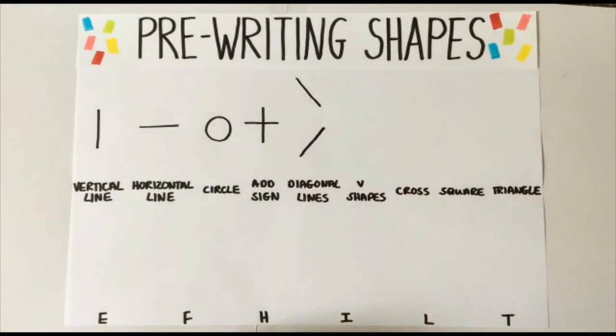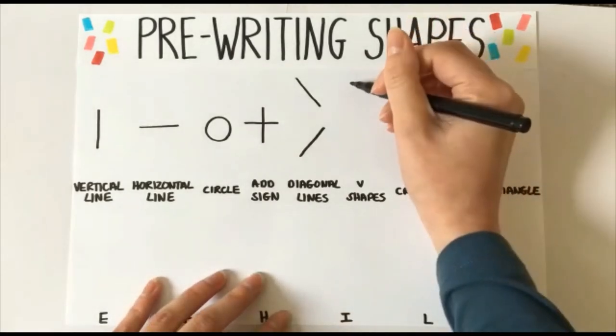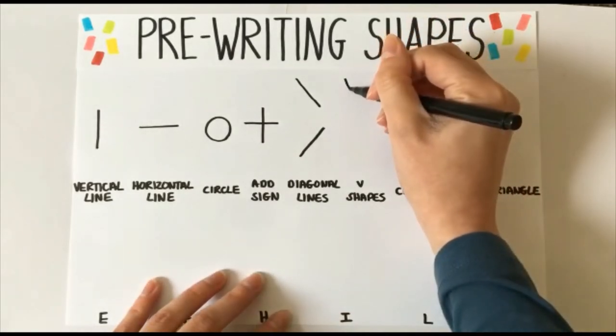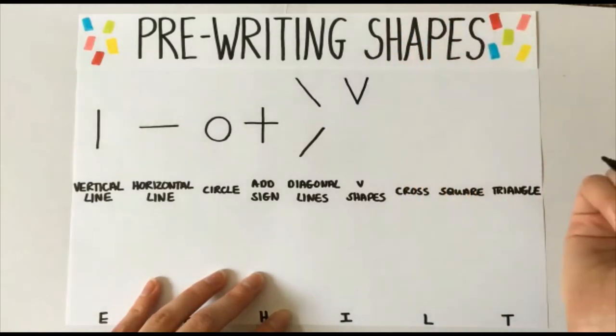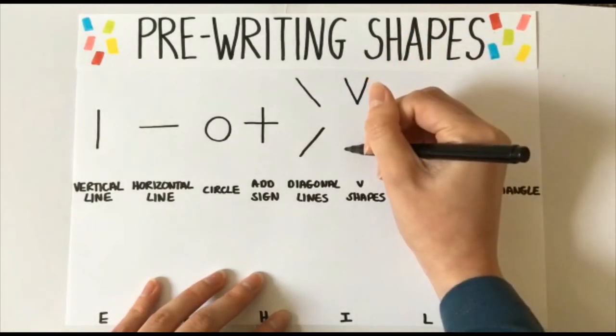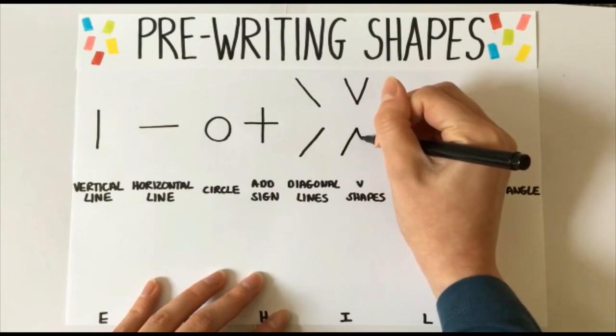V shapes. This is where we need to put our diagonal lines together. Start at the top, diagonal down, diagonal up. Now see if you can do this upside down. Diagonal up, diagonal down.